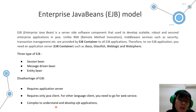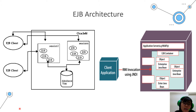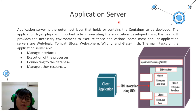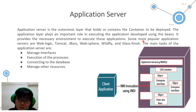The last disadvantage is that EJB is complex to understand and develop. Regarding the EJB architecture, there are two pictures — one 2D and one 3D — showing the same architecture. As you can see, there is an application server running the EJB, with an EJB container inside it, and the object inside the container. The application server is the outermost layer that holds the container, and popular ones include WebLogic, Tomcat, and JBoss. Its main tasks are managing interface execution, connecting to the database, and managing other resources.